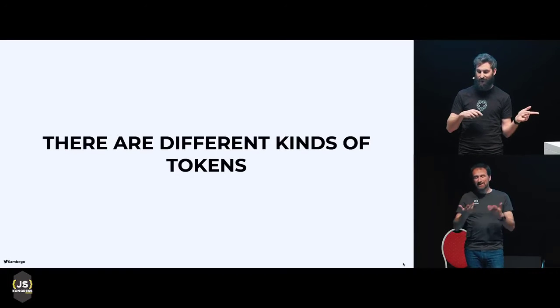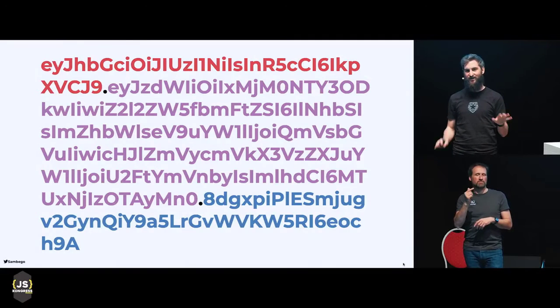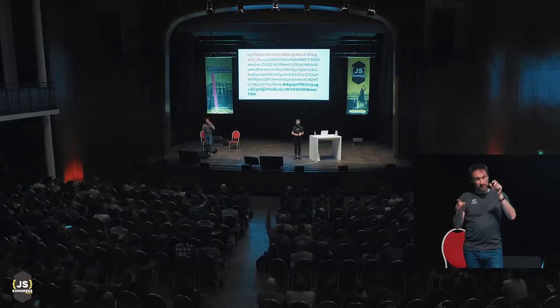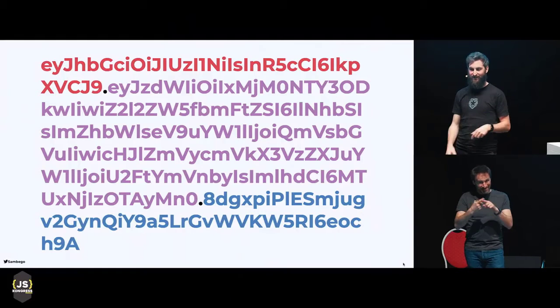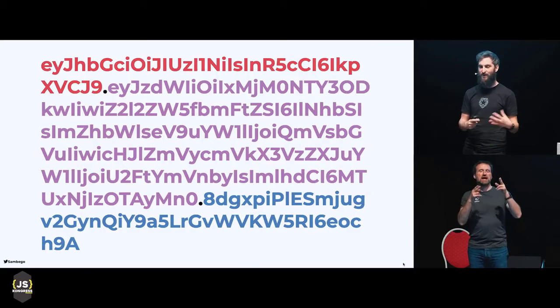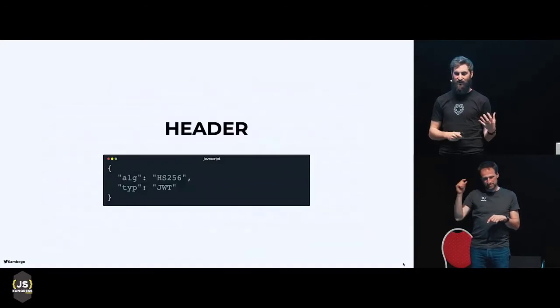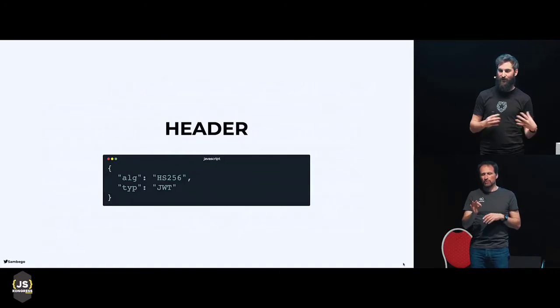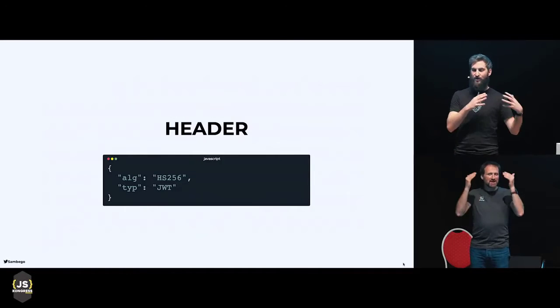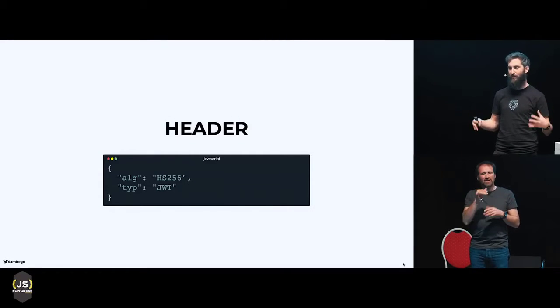So at Auth0 we use JSON Web Tokens as much as possible because we like them. This is a JSON Web Token, and as you might see, there are three different parts. Let's have a look at the different parts. It starts with the first part: the header. This is just a Base64 encoded JSON object, and what this JSON object contains is some metadata about the token itself — which algorithm is used to sign it and that its type is JSON Web Token.